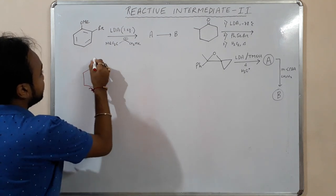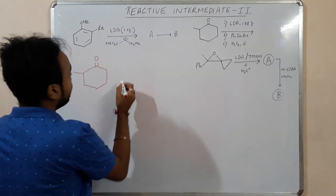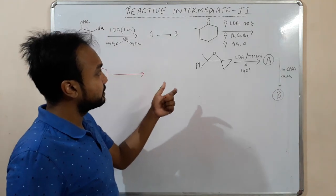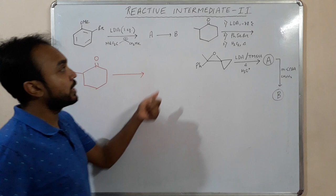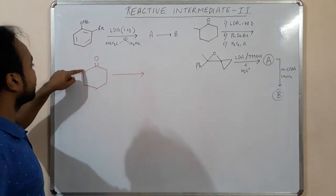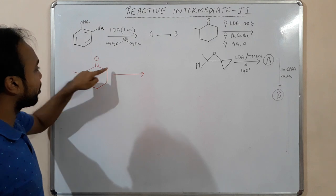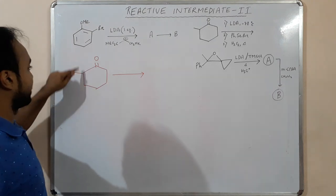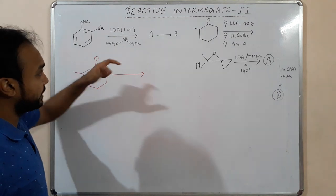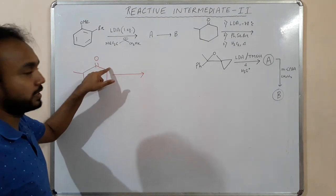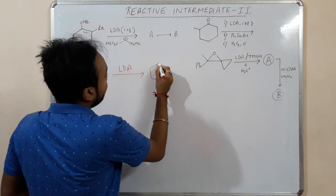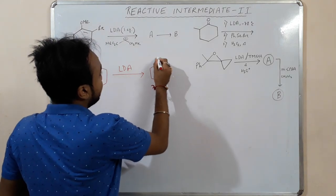We have a substituted cyclohexanone and LDA is given. LDA is a hindered base, so it will abstract a proton from the less hindered side. There are two possibilities — abstraction from this side or this side — but since there is a methyl group on one side making it hindered, LDA takes the proton from the less hindered side.